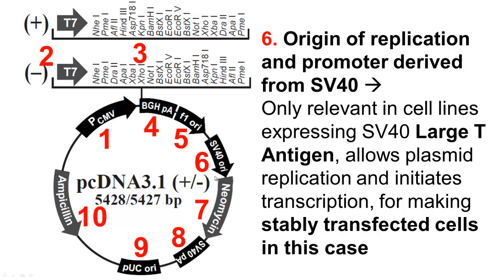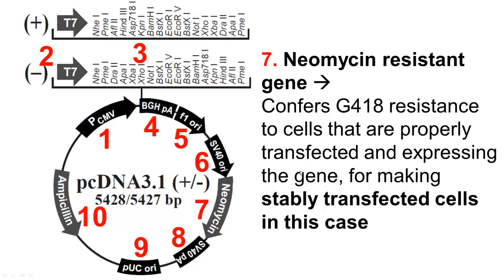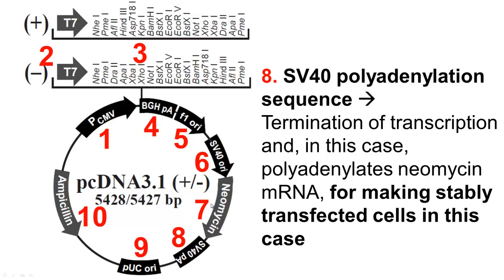In this example, it's specifically used for creating stably transfected cell lines, mainly because of number 7 — the neomycin gene — which is right downstream of the SV40 promoter. This neomycin gene will confer G418 resistance to your cells, so you can select for transfected cells using cell culture media with G418. The last component of these three is number 8, the SV40 termination sequence, which is required for terminating and polyadenylating the neomycin messenger RNA.